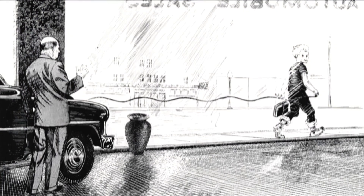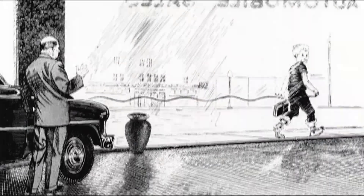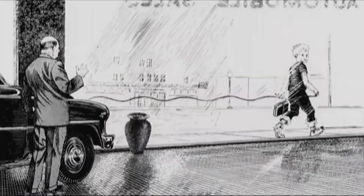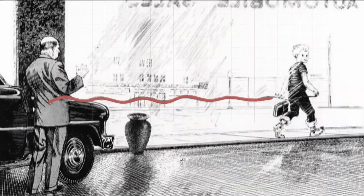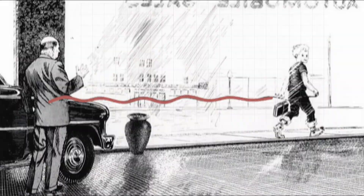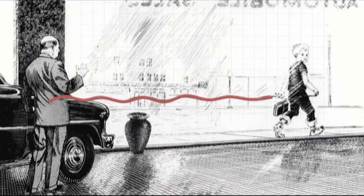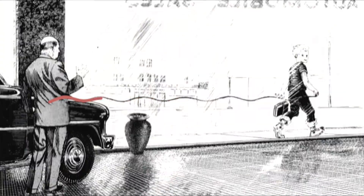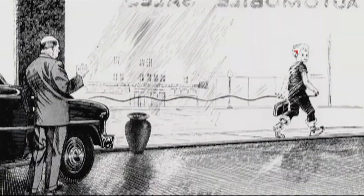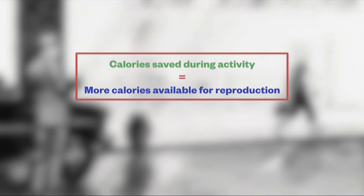If you were to view the path of your centre of mass during gait, it would take the shape of a slightly undulating sinusoidal wave. The smoother this wave, the more efficient your gait, and we know based on the last lecture why efficiency is such an important driver for natural selection — it frees up energy to grow and reproduce.